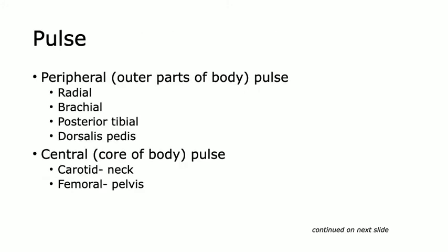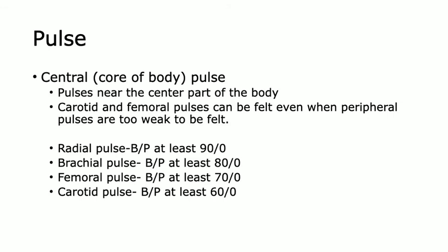Peripheral pulses are the outer parts of the body — radial, brachial, and lower extremities. Central core pulses are the carotid in the neck and the femoral in the pelvis area. Carotid and femoral pulses can be felt even when peripheral pulses are too weak. The blood pressure scale: radial pulse = at least 90 systolic; brachial with no radial = at least 80; femoral with no brachial = at least 70; carotid only = at least 60.